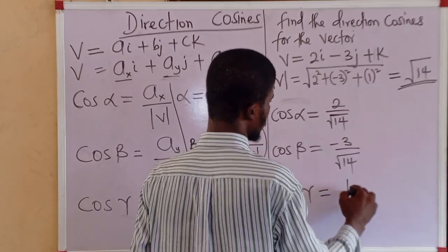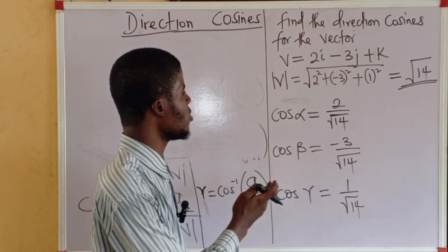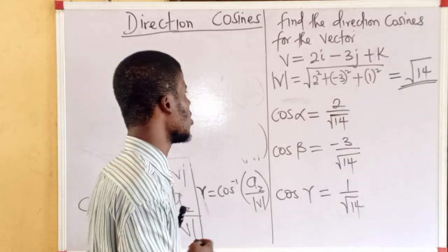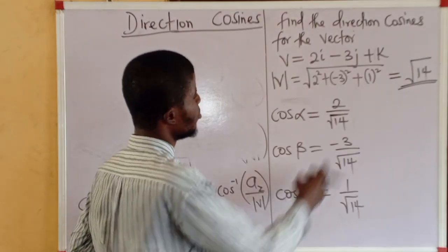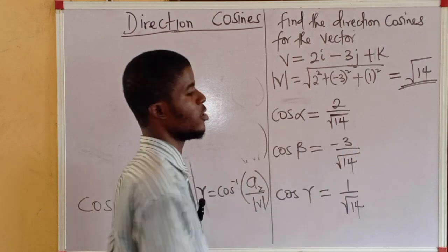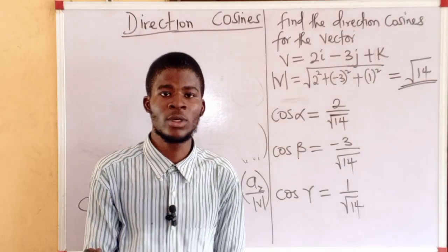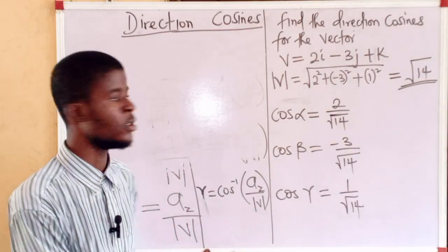And for the z axis, cos gamma, that's 1 all over root 14. These are the direction cosines.